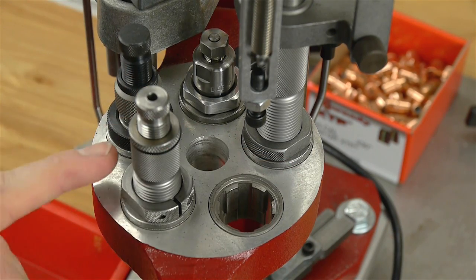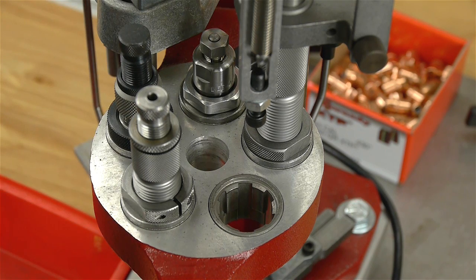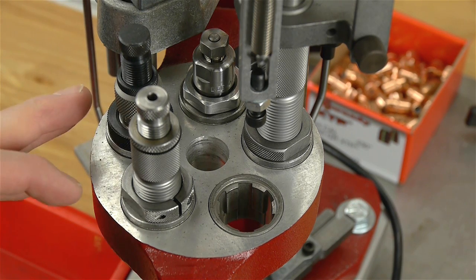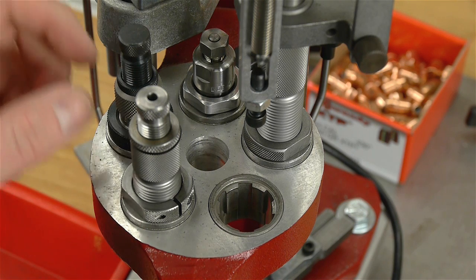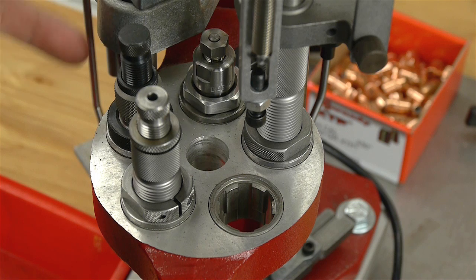now we can just manipulate our seating depth and our crimp independently. If you want to adjust your crimp and you're using a combo crimp seat die, when you adjust the crimp you have to readjust your bullet seat position because you're changing the overall die height.